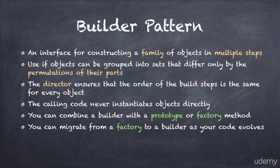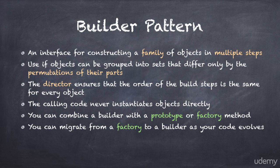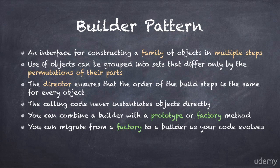The builder pattern provides an interface for constructing a family of complex objects in multiple steps. You use it if your objects can be grouped into sets that differ only by the permutation of their internal parts, and if the construction process consists of a number of discrete steps. You can implement the construction code of the builder with a prototype or factory pattern. And it's perfectly fine to migrate from a factory method pattern to a builder or prototype pattern as your code evolves.